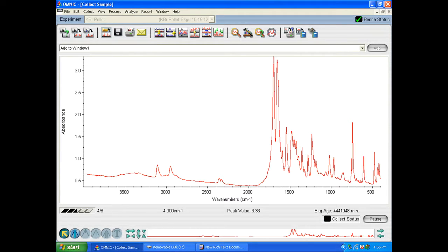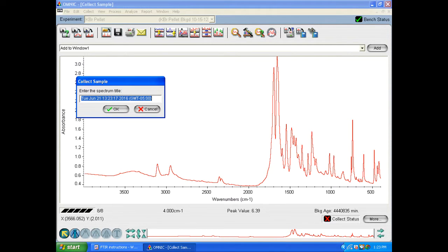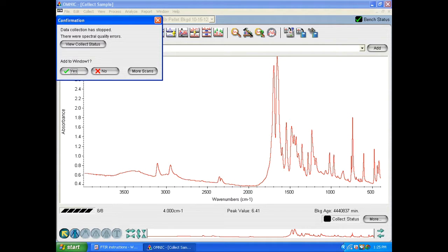So you'll see a little window here that says please prepare to collect the sample spectrum. Hit OK. And then the software will go ahead and start collecting data from the experiment. Once you have the data collected it'll ask you to name your spectrum. So in this case we'll just call it caffeine IR sample since that is what we ran. After we hit OK we'll get a window that says confirmation. Data collection has stopped. There were spectral quality errors.